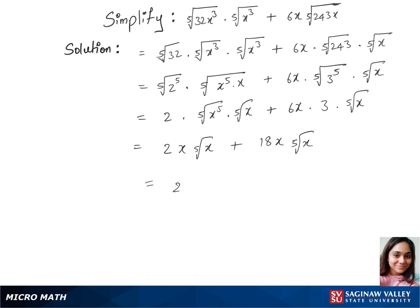18 plus 2 is 20, so that's 20x times fifth root of x. That's our final answer.